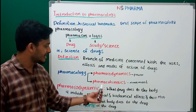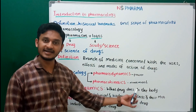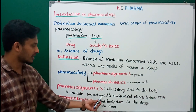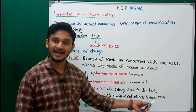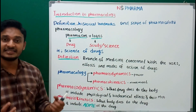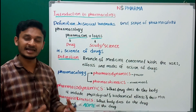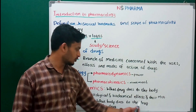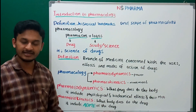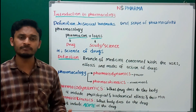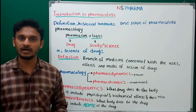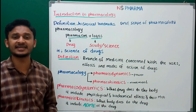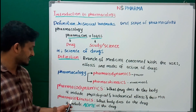Pharmacodynamics means what the drug does to the body — the power of the drug, its action in the body. It includes physiological and biochemical effects and their mechanism of action. Pharmacokinetics means what the body does to the drug — it includes ADME: absorption, distribution, metabolism, and excretion. How the drug is absorbed into systemic circulation, how it is distributed, metabolized, and excreted from the body.